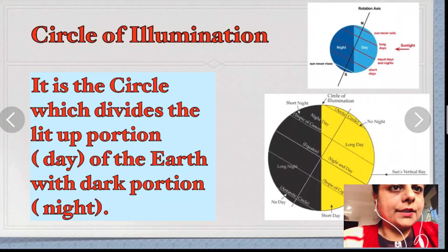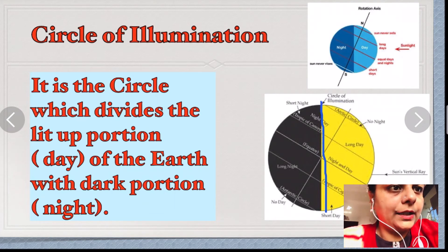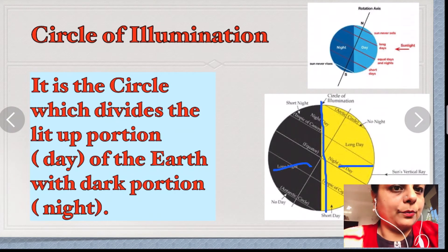Let's understand what is circle of illumination. Circle of illumination is the line which divides the lit part of the day and the darker portion of the Earth. The part which faces the Sun is day, the part which is away from the Sun is night.